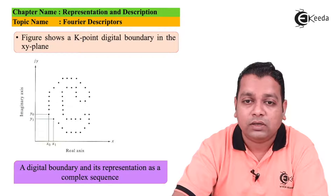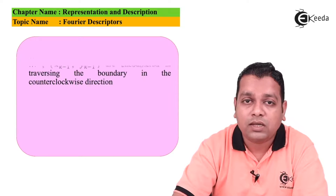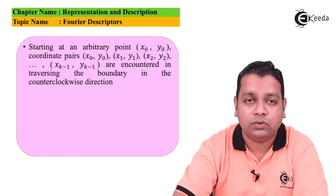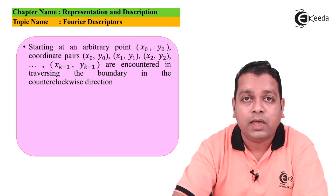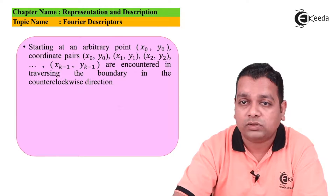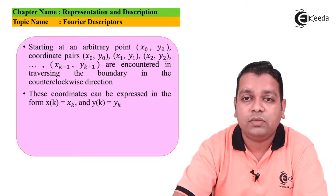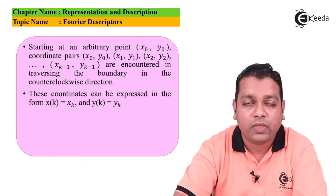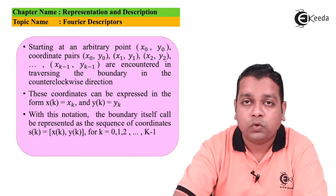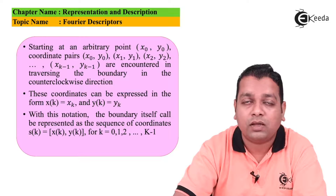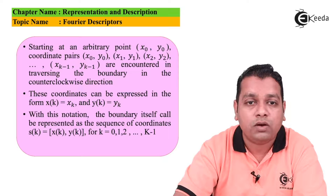Starting at any arbitrary point x0, y0, the coordinate pairs x0,y0 then x1,y1, x2,y2, up to x_{K-1}, y_{K-1} are encountered when traversing this boundary in the counterclockwise direction. These coordinates can be expressed as x(k) = x_k and y(k) = y_k. With this notation, the boundary itself can be represented as the sequence s(k) = [x(k), y(k)], for k = 0, 1, 2, ..., K-1.